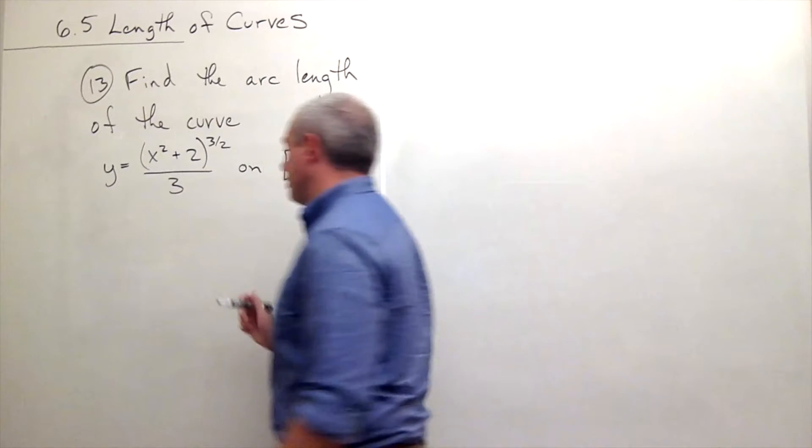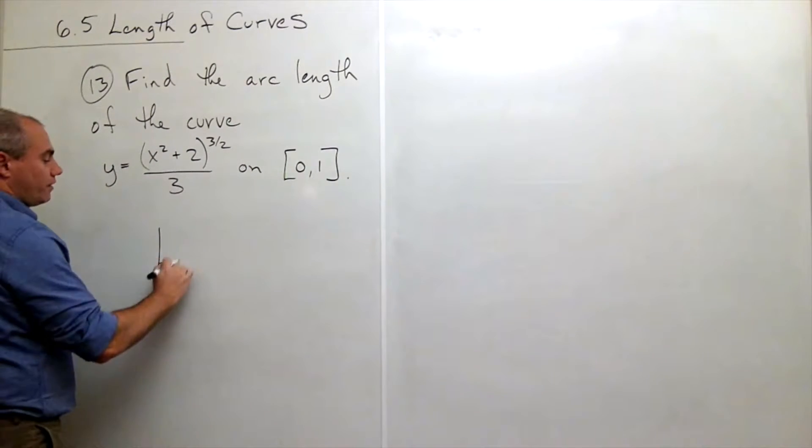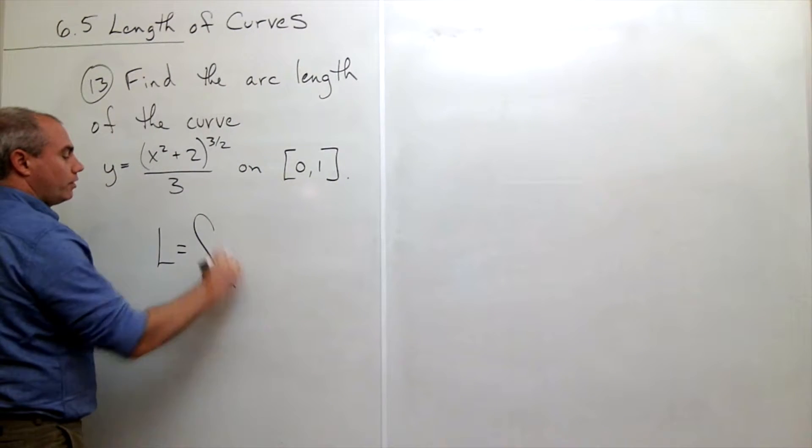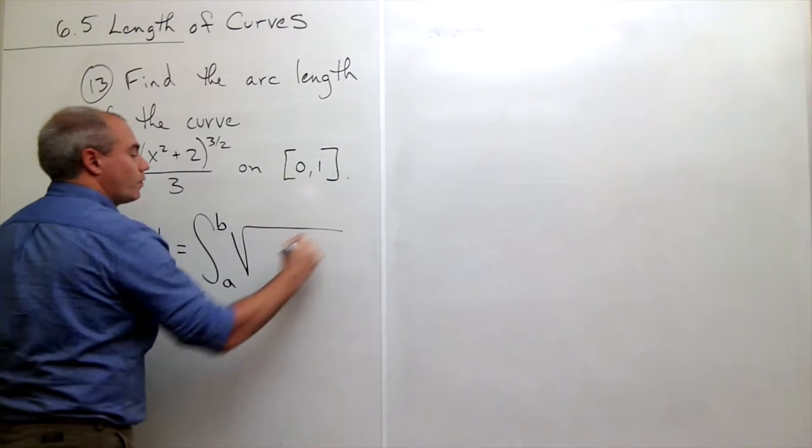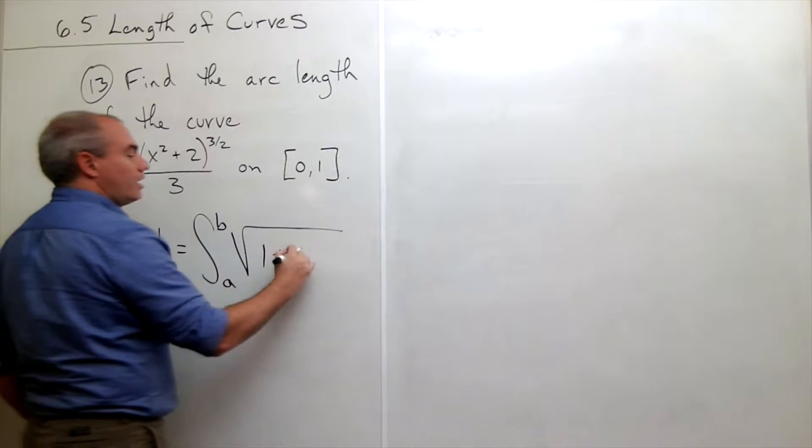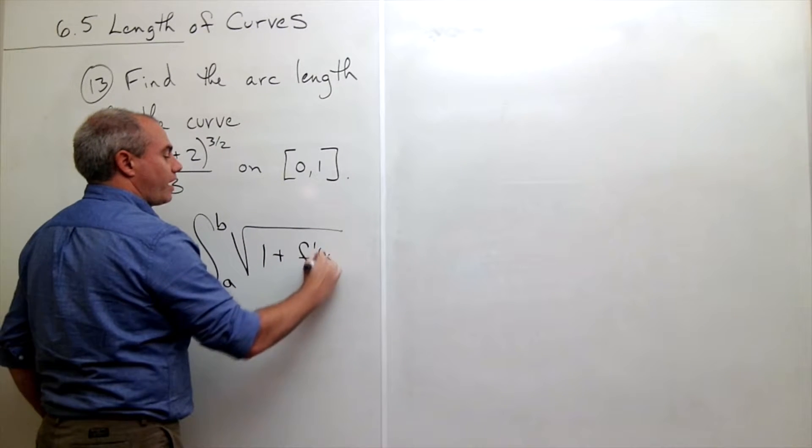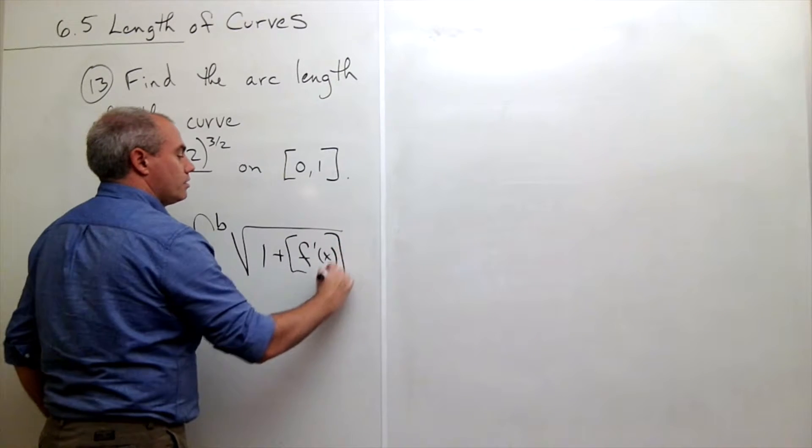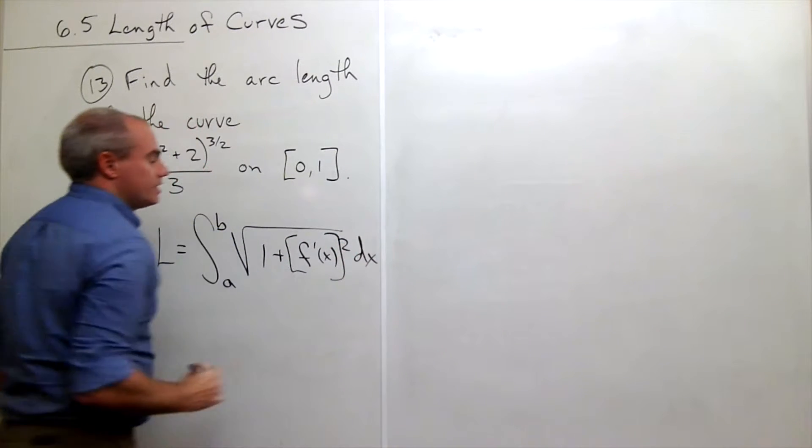So we're going to use our arc length formula again, so let's just remind ourselves. L is equal to the integral from a to b of the square root of 1 plus f prime of x quantity squared dx.